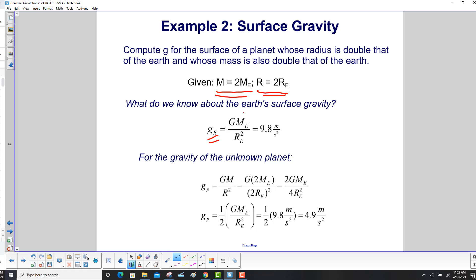Well, g sub e for Earth is G M sub e over R sub e squared, and that's 9.8 meters per second squared. The gravity of the unknown planet will start with GM over r squared, where big M and big R are the mass and radius of this new planet.